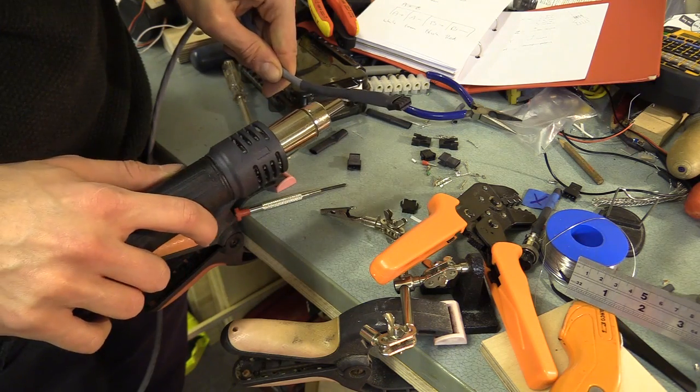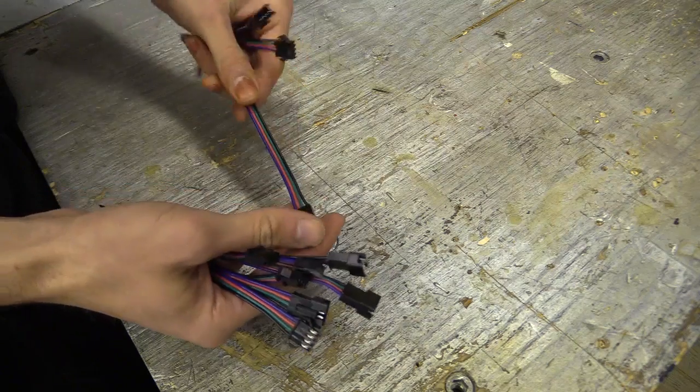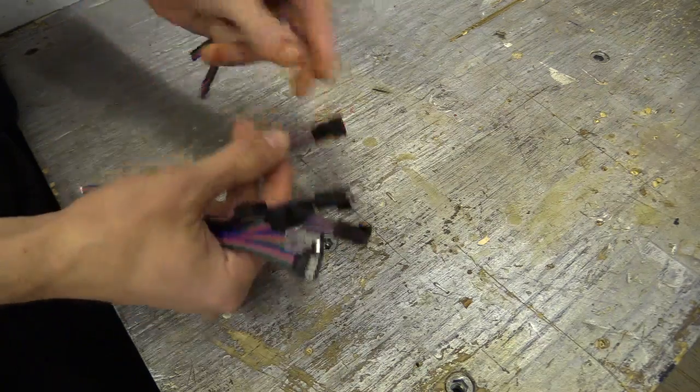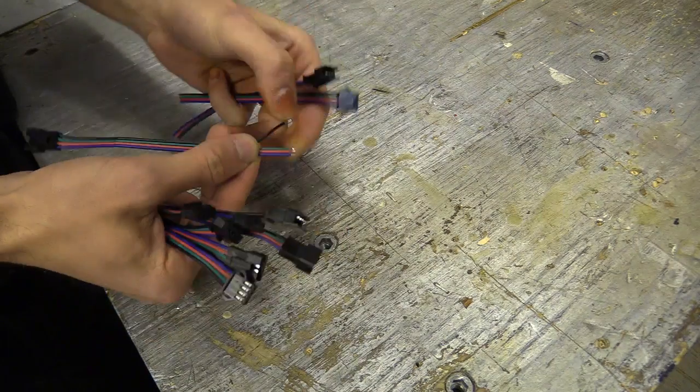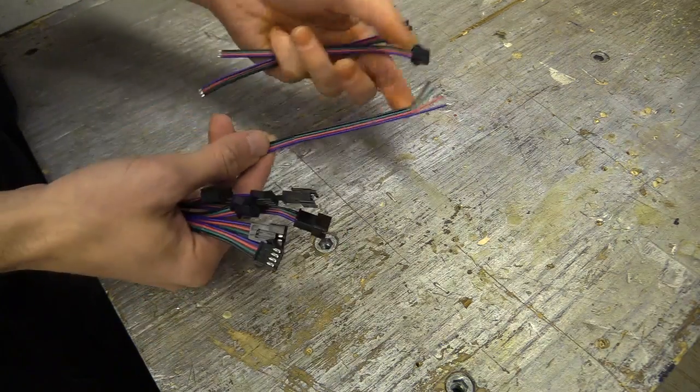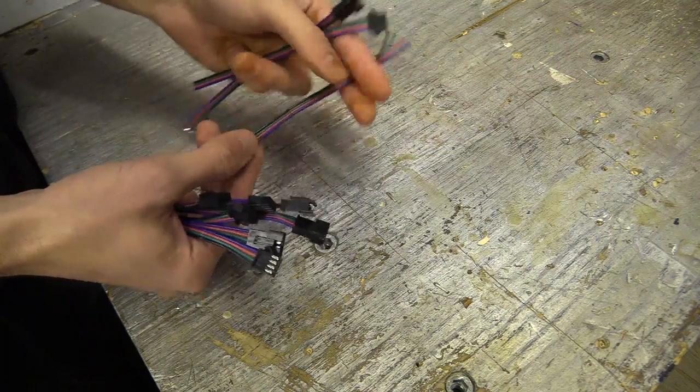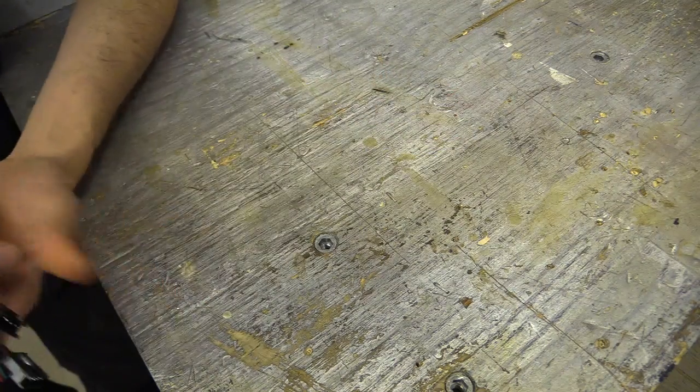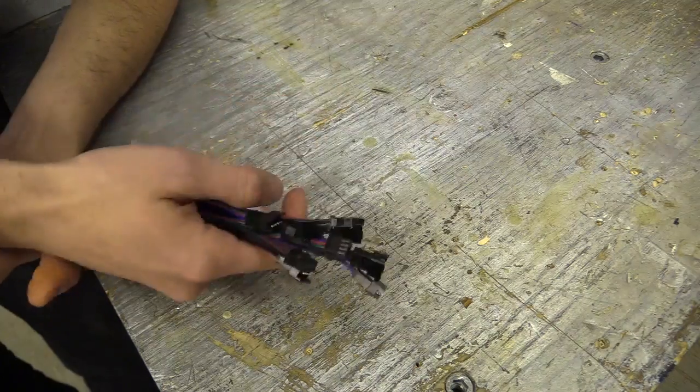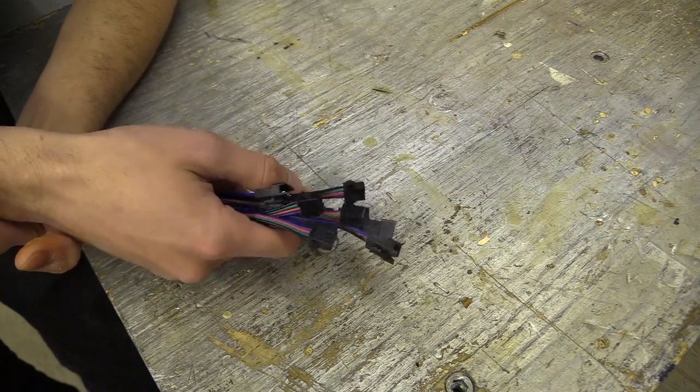An alternative to making the JST connections up yourself is to buy them pre-assembled. So all you would have to do is solder onto the ends, maybe cut it down and solder. Another alternative is to simply not use these and to wire directly to the stepper drivers.